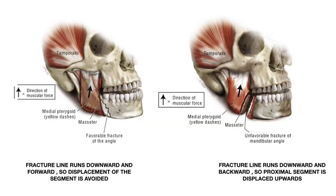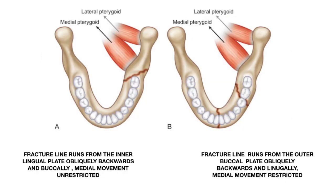To understand this further: a fracture line that runs downward and forward avoids displacement — even though the pull of the masseter tries to separate the fragments, the direction of the fracture line results in the segments not being displaced. On the other hand, when the fracture line runs downward and backward, the pull of the masseter results in displacement of the proximal segment upward, making it an unfavorable fracture.